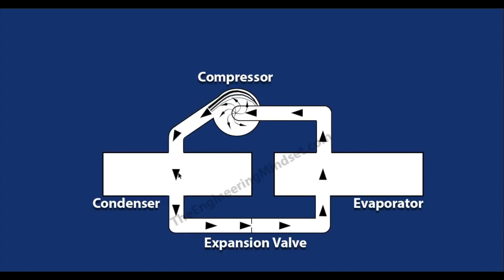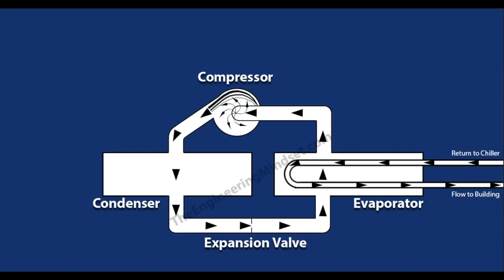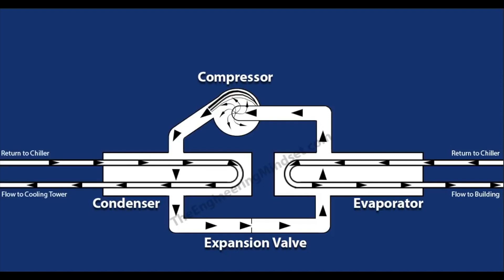There are three main circuits in a chiller you also need to know about. First is the refrigeration loop — the refrigerant which passes around each of the four components, transferring heat from the evaporator over to the condenser. The second circuit is the chilled water loop — the heat from the building being collected and sent to the chiller, then back to the building. The third and final circuit is the condenser circuit — the heat being sent to the cooling towers and returning to pick up more heat.